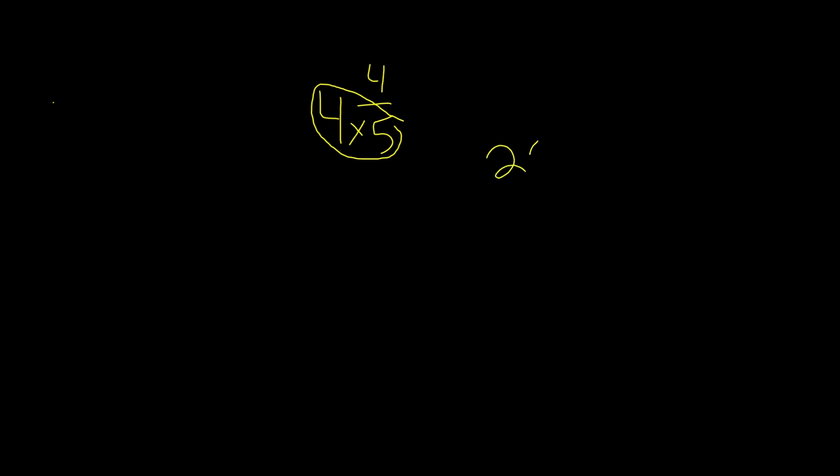And then remember what we do, we add this to our numerator, which is 4, and this is 24. So this is our new numerator. And remember, we keep our old denominator as is, so we keep the 5. And this is our mixed number in improper fraction form.